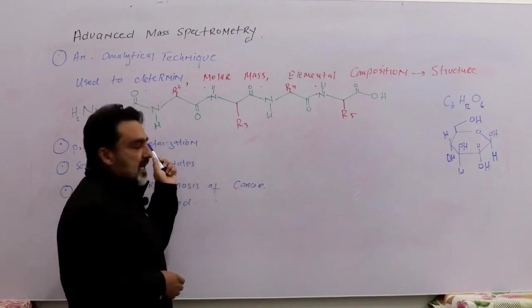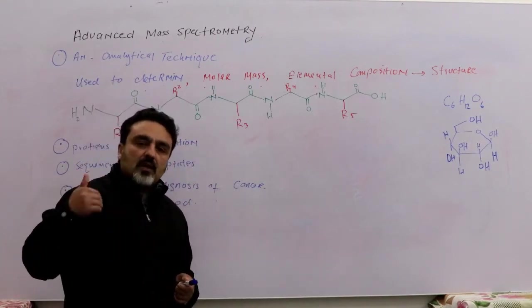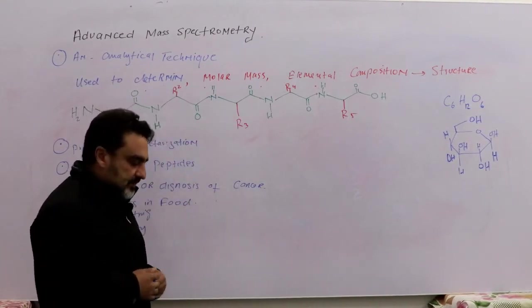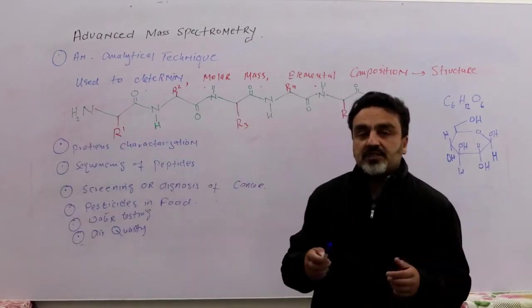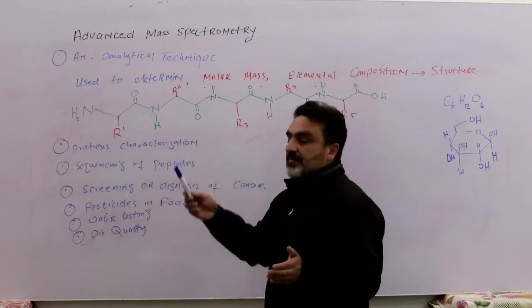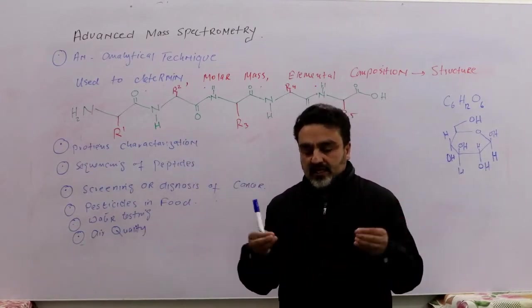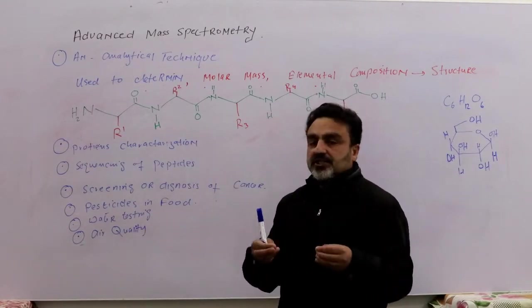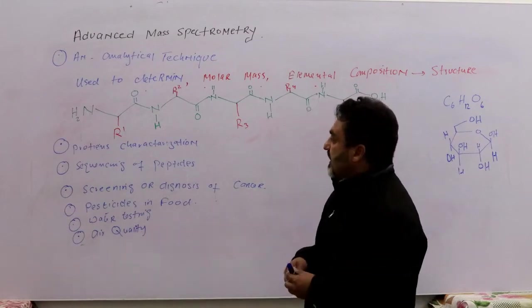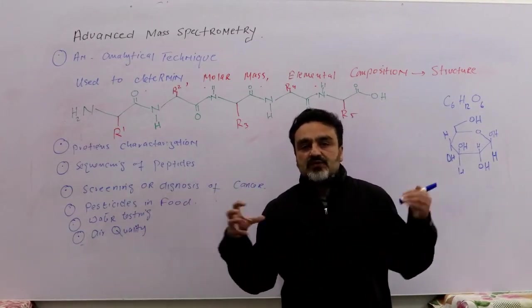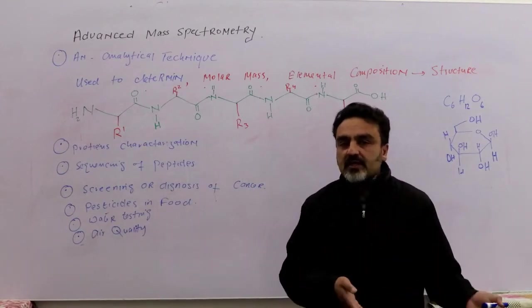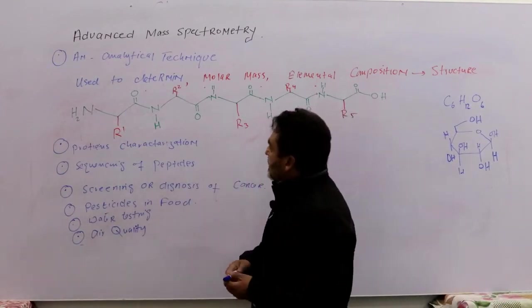They are also extremely important biologically, and mass spectrometry can help to find out the sequence of the amino acids joining each other and forming the peptide. I mean to say, which amino acid connects with which amino acid to produce the peptide, just like this.